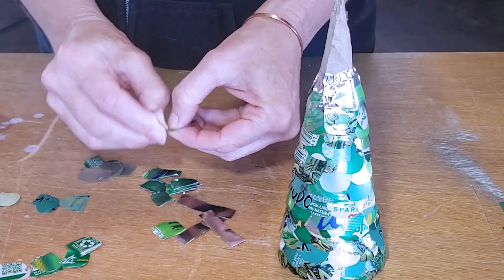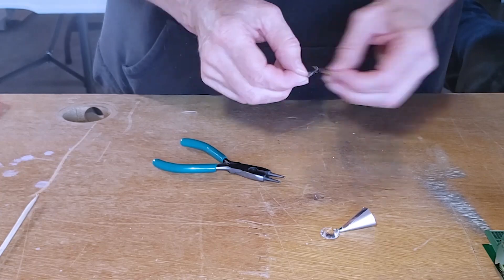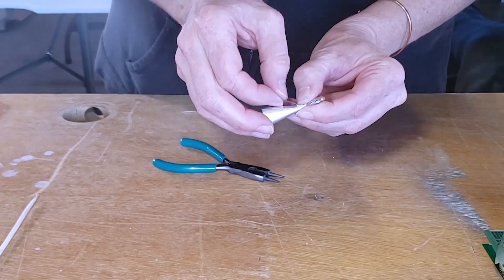To finish the Christmas tree I cut another small cone from the aluminum sheet and I added a little crystal to the top with some e6000 glue to make my tree topper.